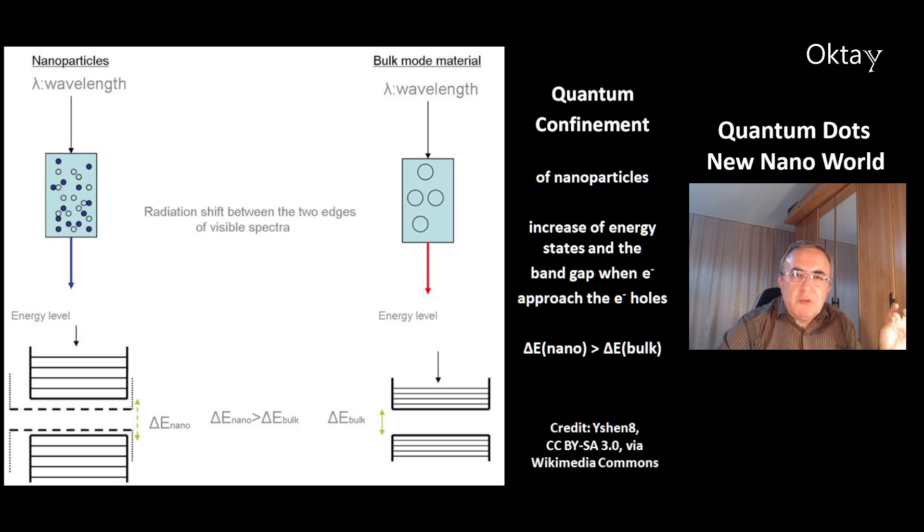This is a picture of quantum confinement of nanoparticles. At the right, this is the bulk mode material with its energy levels and its bandgap. And at the left, that's the nanoparticles. And you get an increase of energy states and the bandgap.